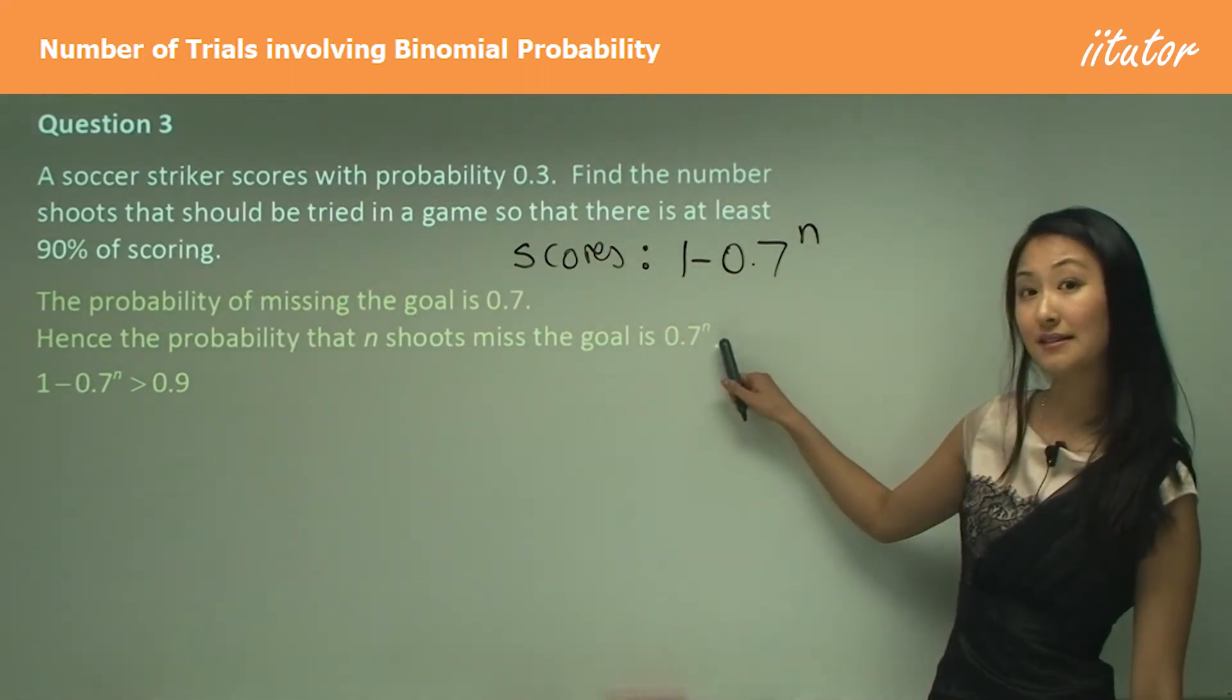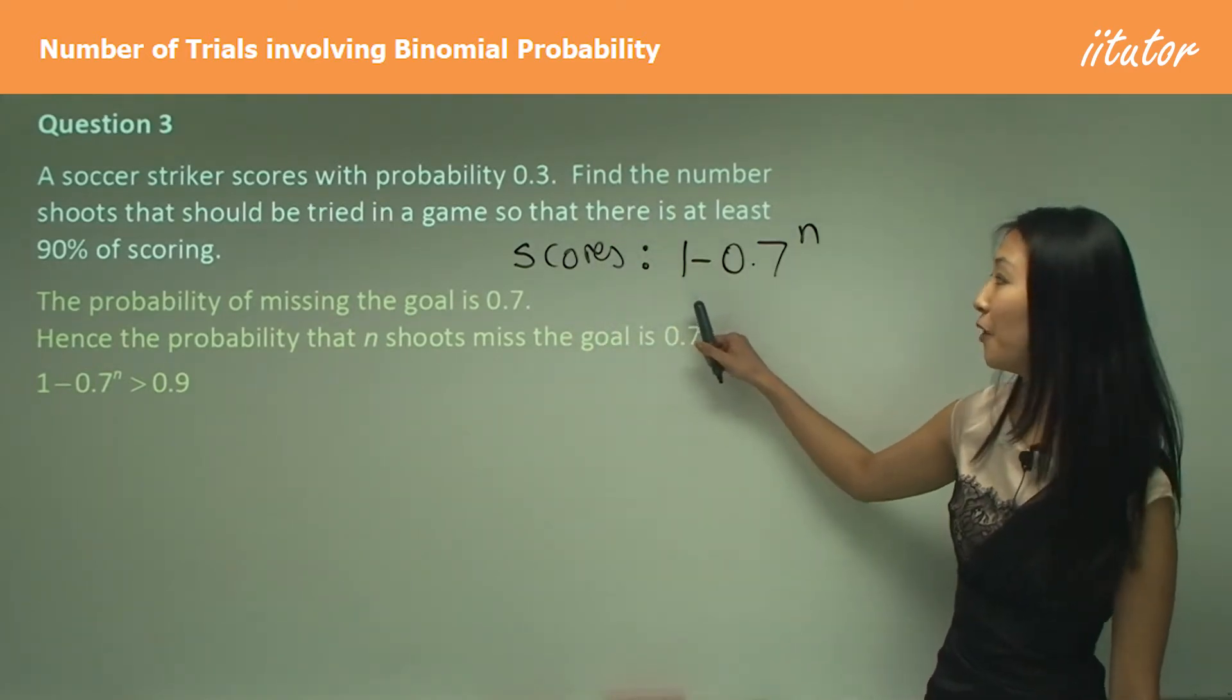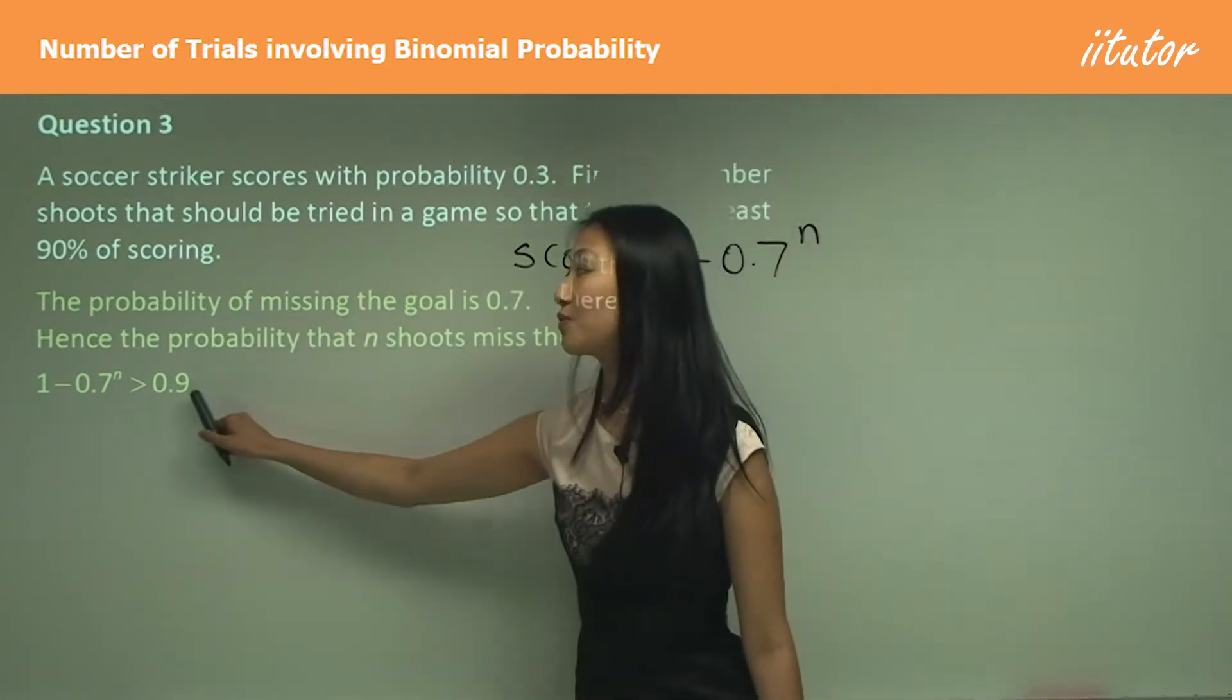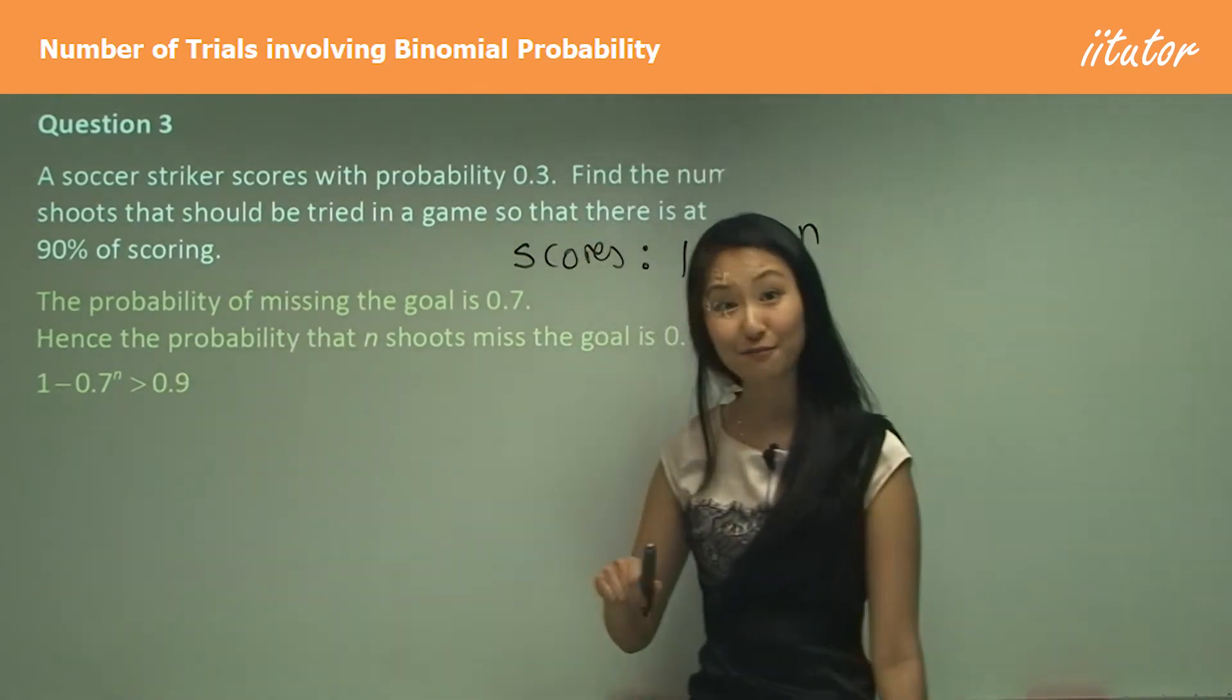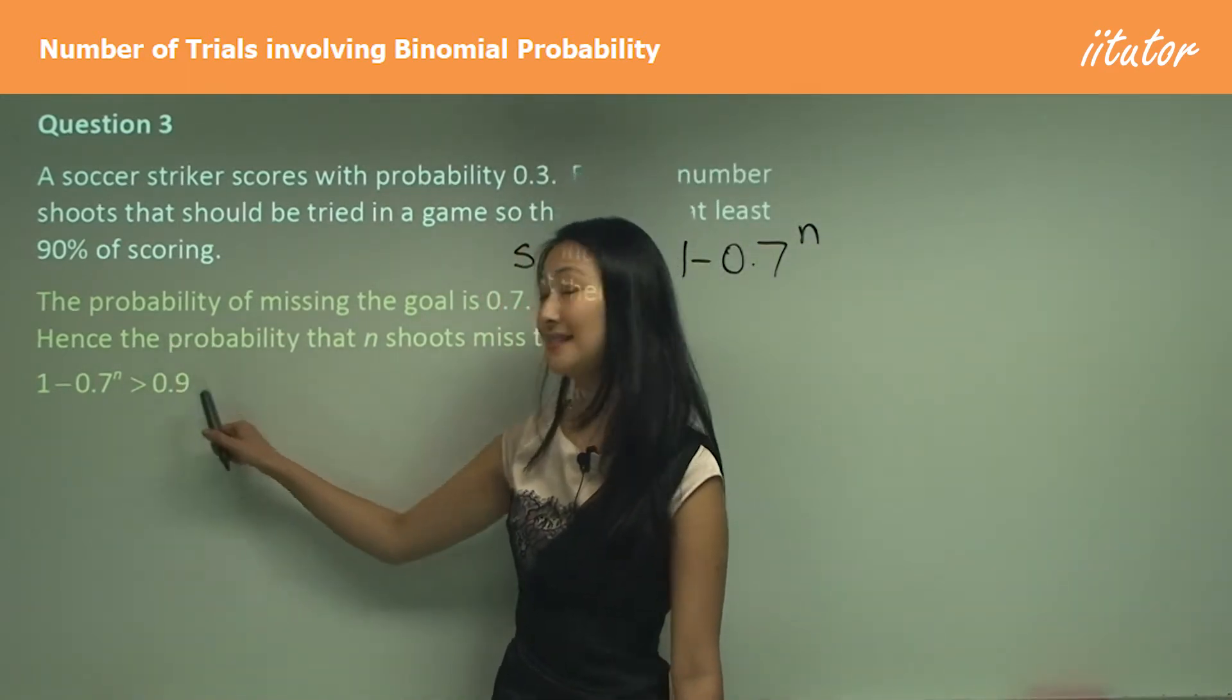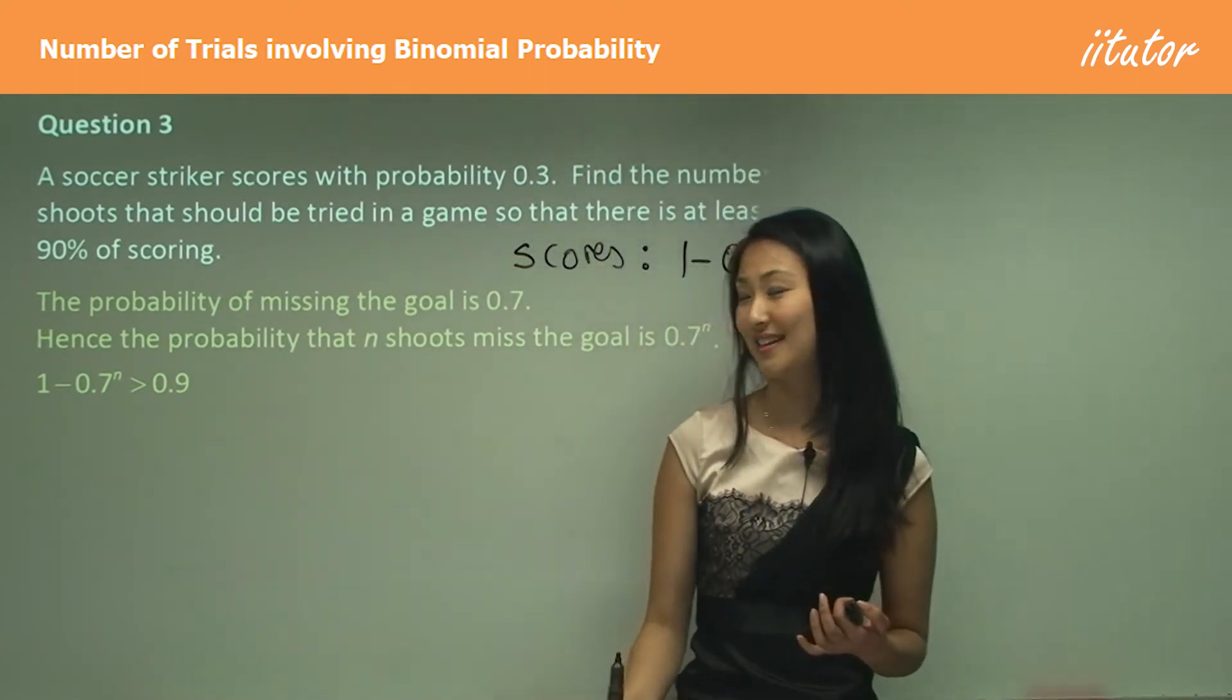If this is what misses is, then 1 minus that will be scores. We want to find the probability of scores when it's greater than 90%. That's why we've put in 1 minus 0.7 to the power of n greater than 0.9, and now we want to find out the number of shoots that's necessary for that.